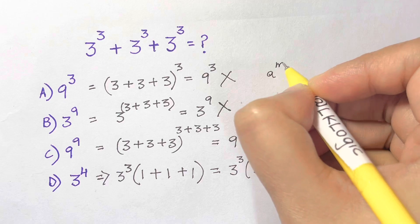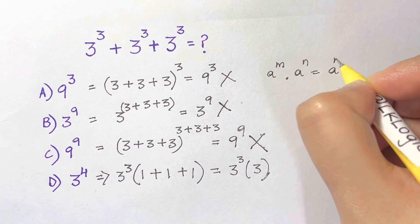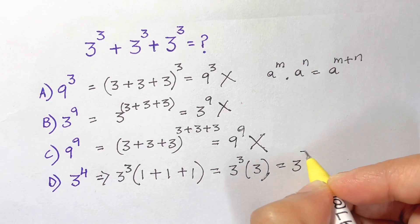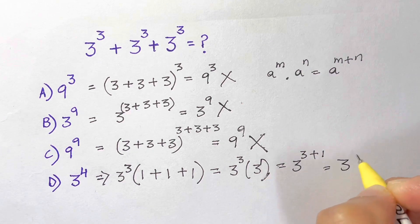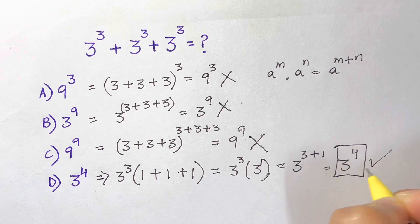Whenever you have this, we're going to apply this rule: a to the power of m times a to the power of n equals a to the power of m plus n. So here we have 3 to the power of 3 plus 1, which is equal to 3 to the power of 4. And that's your answer, choice D.